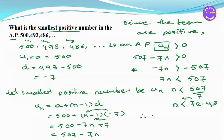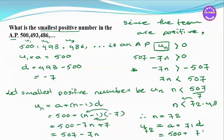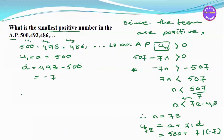Therefore n equals 72. The 72nd term is the last positive term. Using the formula: U72 equals a plus 71d, which is 500 plus 71 times minus 7, equal to 500 minus 497.